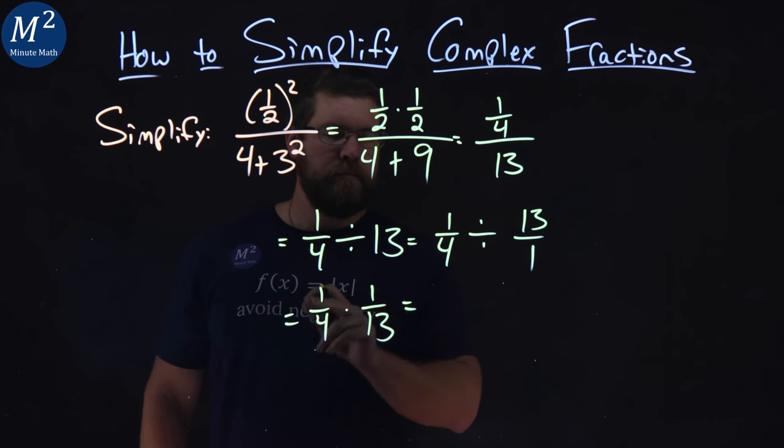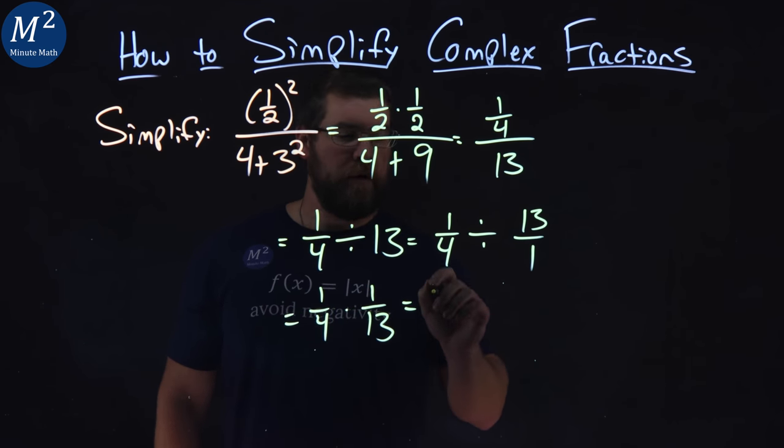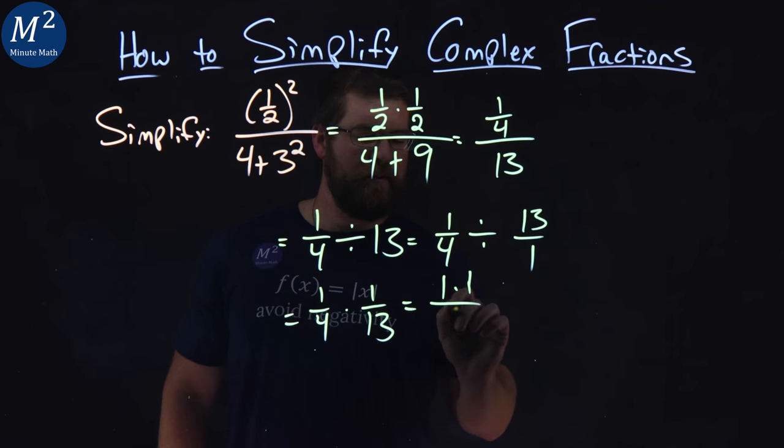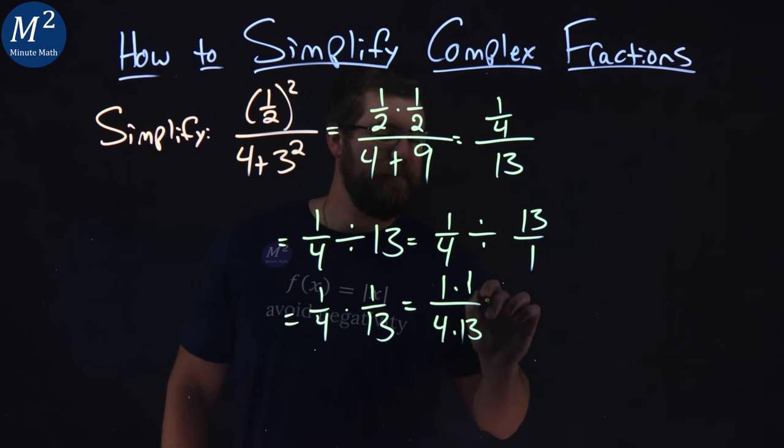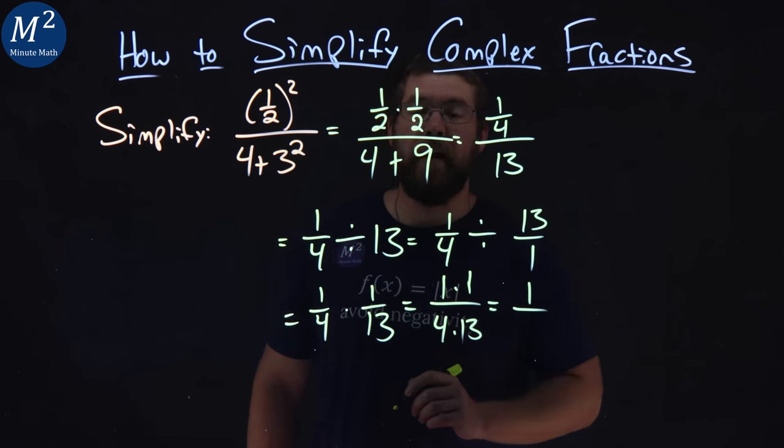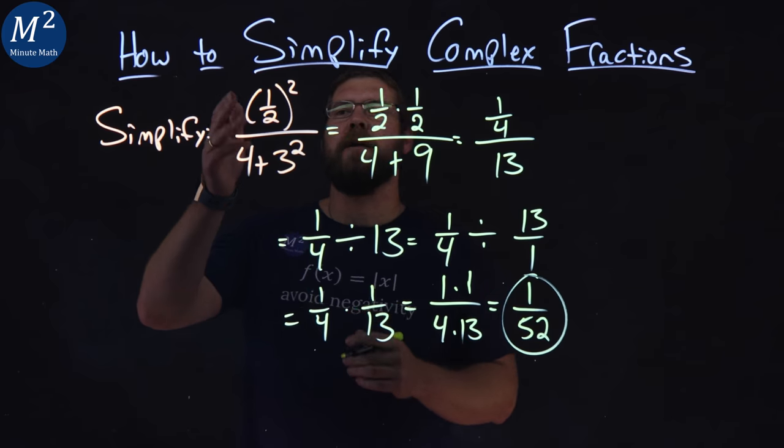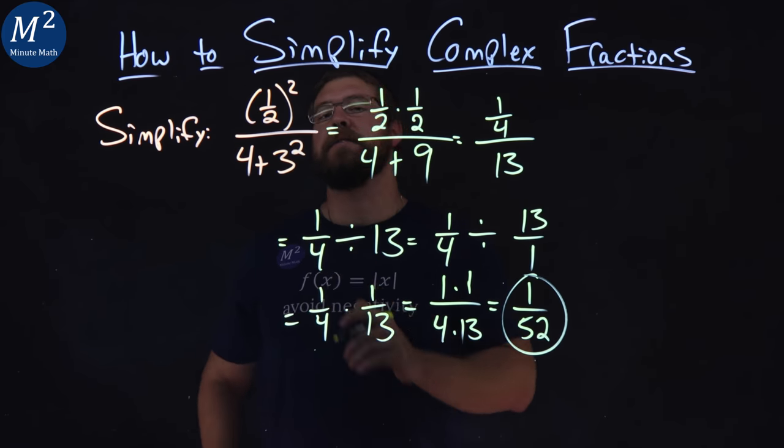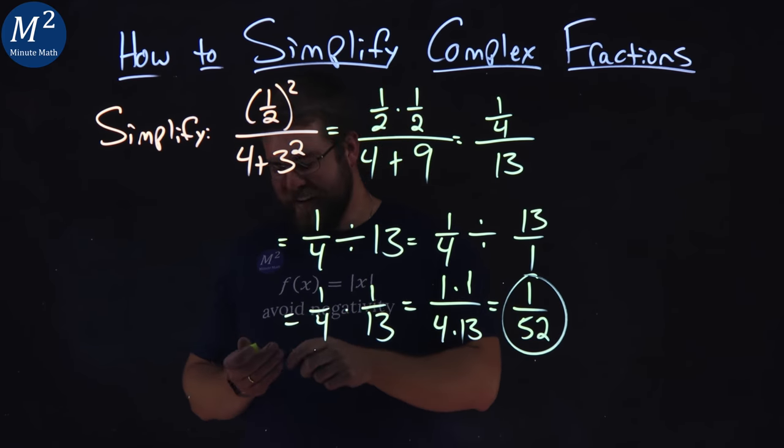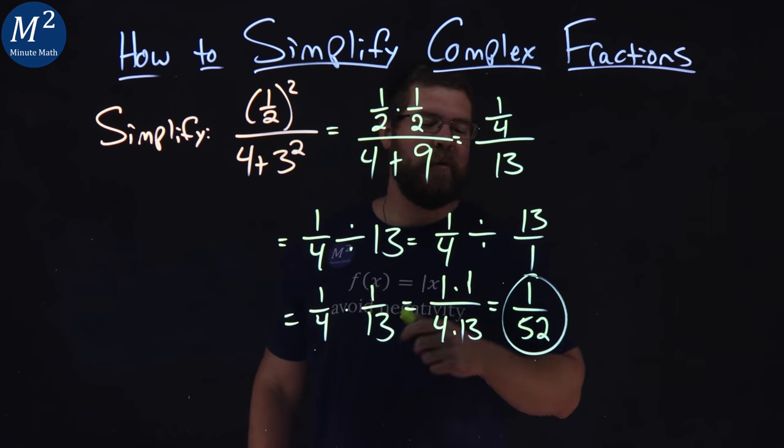From there, multiply across the numerator and denominator, 1 times 1 over 4 times 13. Well, 1 times 1 is 1, and 4 times 13 is 52. And there we got it. This whole thing, one half squared divided by 4 plus three squared, simplifies to be 1 over 52.